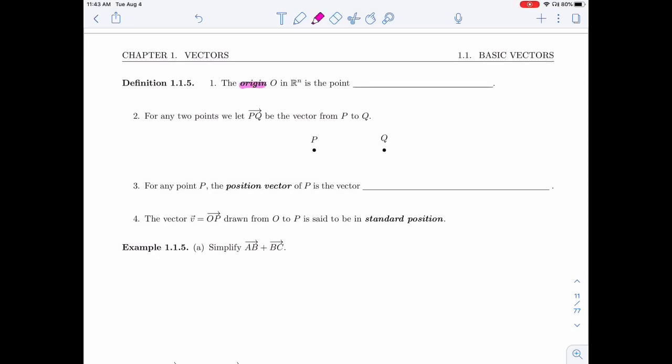The origin in R^n will be the point O, whose components are all zeros.